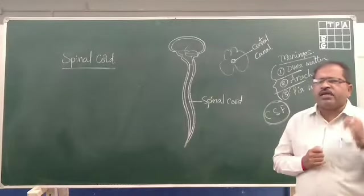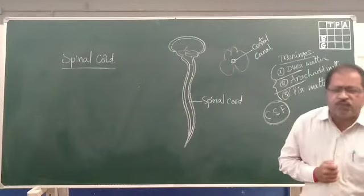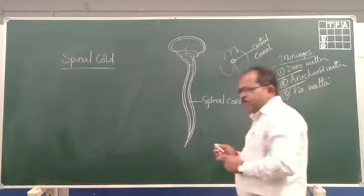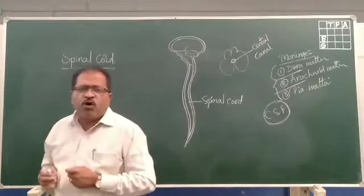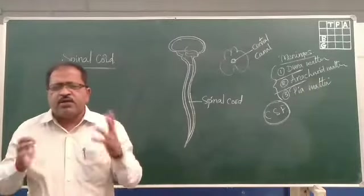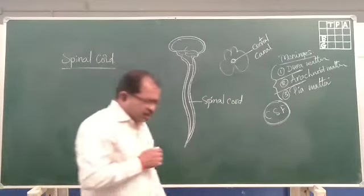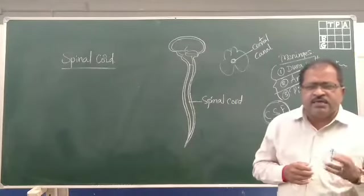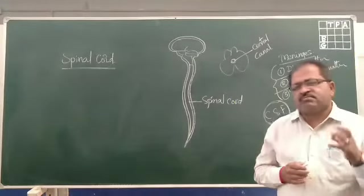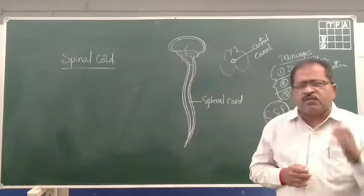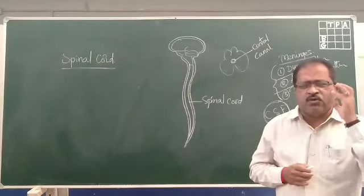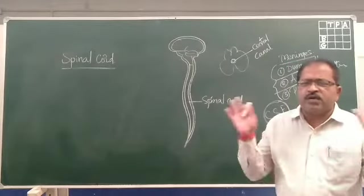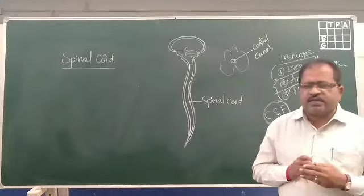The spinal cord is mostly responsible for reflex actions. A sudden reaction given by a person to a stimulus is called a reflex action — that we will discuss separately in the next video. The major function of the spinal cord is reflex action, and it supports reflex actions because reflex actions do not need to go into the brain. The spinal cord itself gives the reaction for reflex actions.